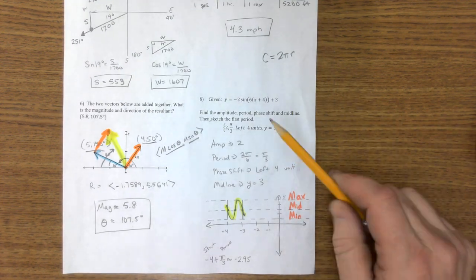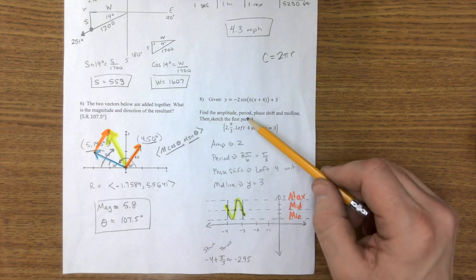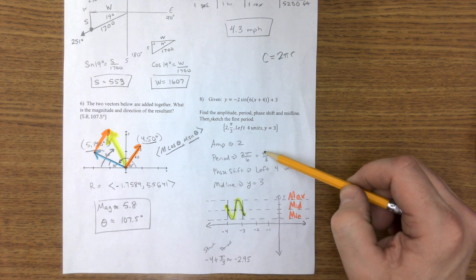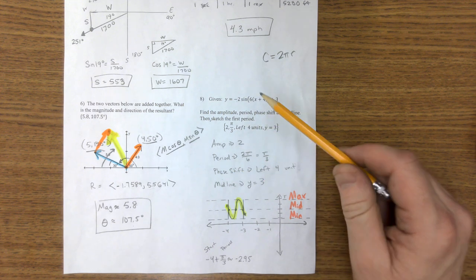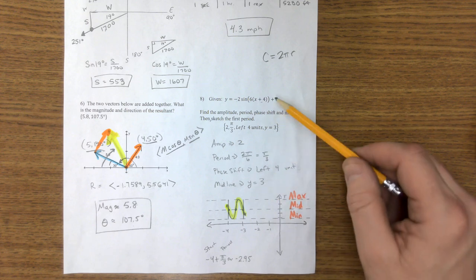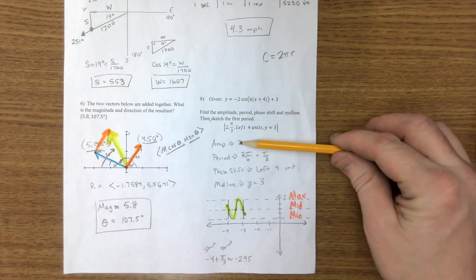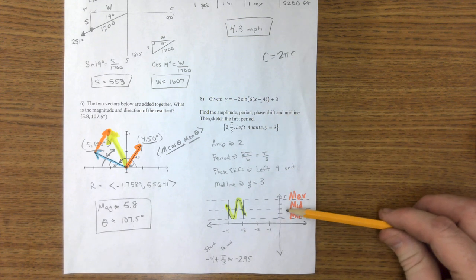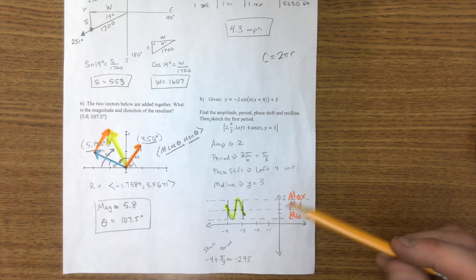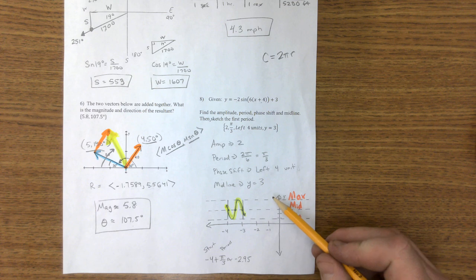On the last one, the amplitude is 2. The period is 2 pi divided by 6, which is just pi over 3. The phase shift is left 4 units. And the midline is 3. So we have all those problems. There's the graph. Midline, maximum, minimum. The lowest this graph goes down is down to negative 1. The highest, it goes up to 5. That's the min and the max.